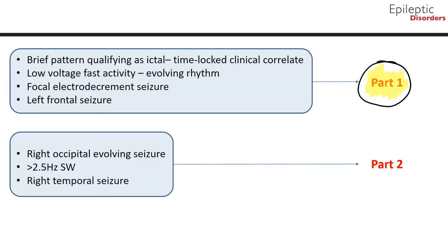In part 1 of this module, we will discuss the following seizures: a brief pattern qualifying as ictal with a time-locked clinical correlate, a pattern of low-voltage fast activity and evolving rhythm, a focal electrodecrement seizure, and a left frontal seizure. In part 2, we will discuss a right occipital evolving seizure, a seizure consisting of greater than 2.5 Hz spike wave pattern, and a right temporal seizure.